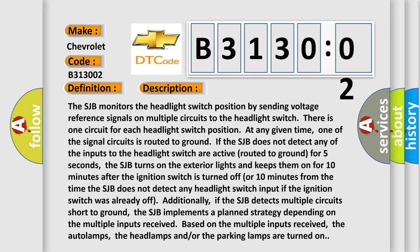The SJB monitors the headlight switch position by sending voltage reference signals on multiple circuits to the headlight switch. There is one circuit for each headlight switch position. At any given time, one of the signal circuits is routed to ground.